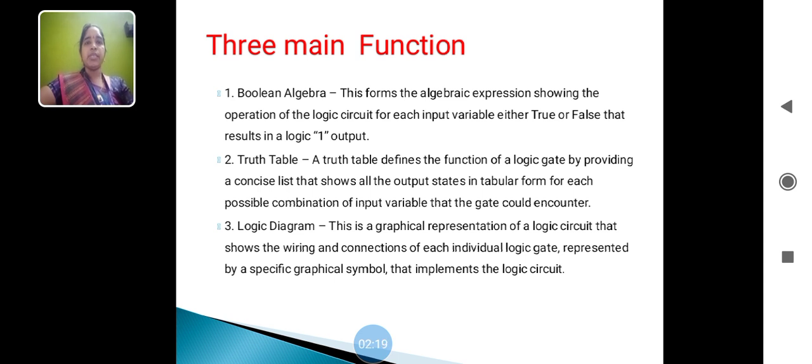Now we are going to see step by step. Boolean algebra forms the algebraic expression showing the operations of the logical circuit for each input variable, either true or false, that results in a logic 1 output. That means Boolean algebra is a true or false statement. The true statement will be represented in the form of 1, and a false statement will be represented in the form of 0.